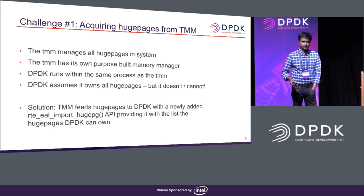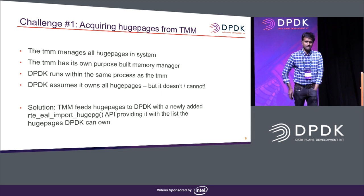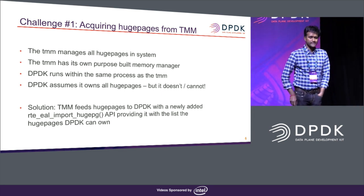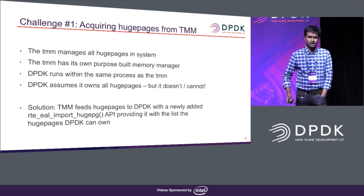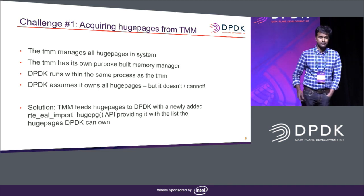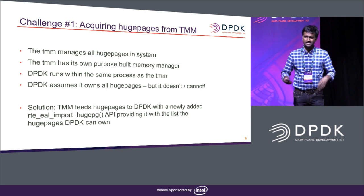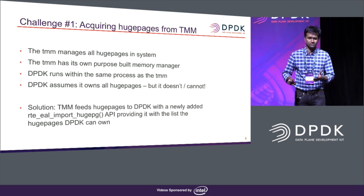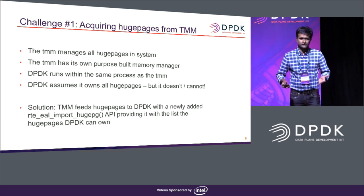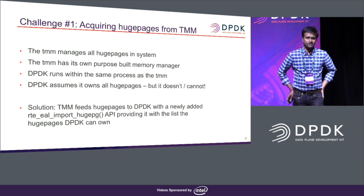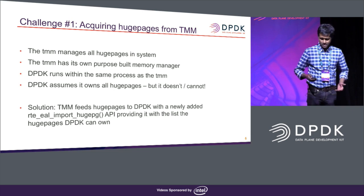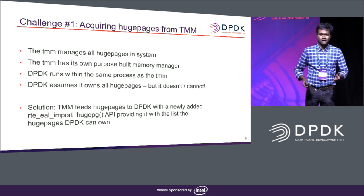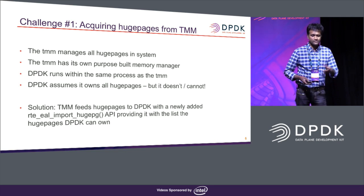We wanted to retain TMM's memory ownership — TMM takes huge pages initially, and we wanted to continue that model where TMM still takes huge pages and shares them with DPDK before calling rte_eal_init. We introduced a new API called rte_eal_import_hugepage. It's a simple API that transfers huge page metadata — the virtual address, physical address, and file offset within the hugetlbfs — to DPDK, storing it in a static array. When rte_eal_init is called, we had to make some tweaks in the rte_eal_legacy_mem_init function to take care of the mmap.